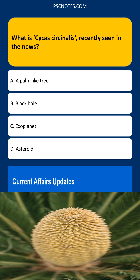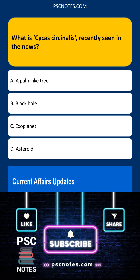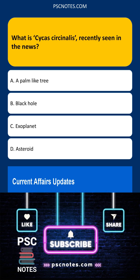A black hole is a region of spacetime with extreme gravity. An exoplanet is a planet outside our solar system. An asteroid is a small rocky body orbiting the sun. These are all astronomical objects, unrelated to a plant species.